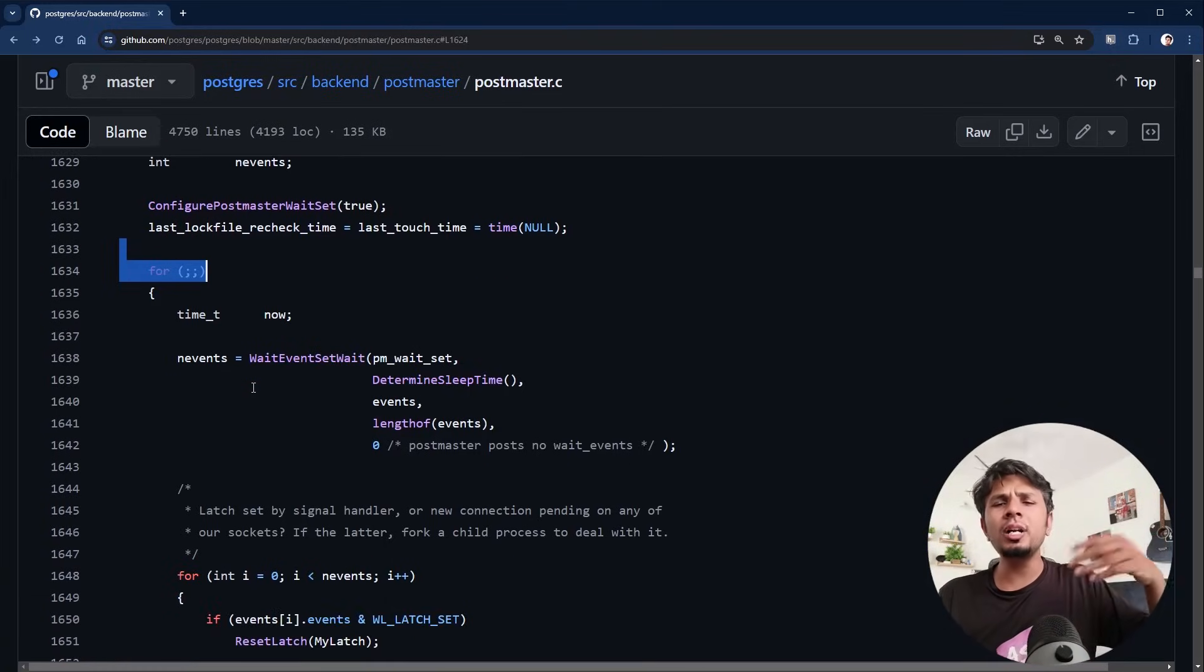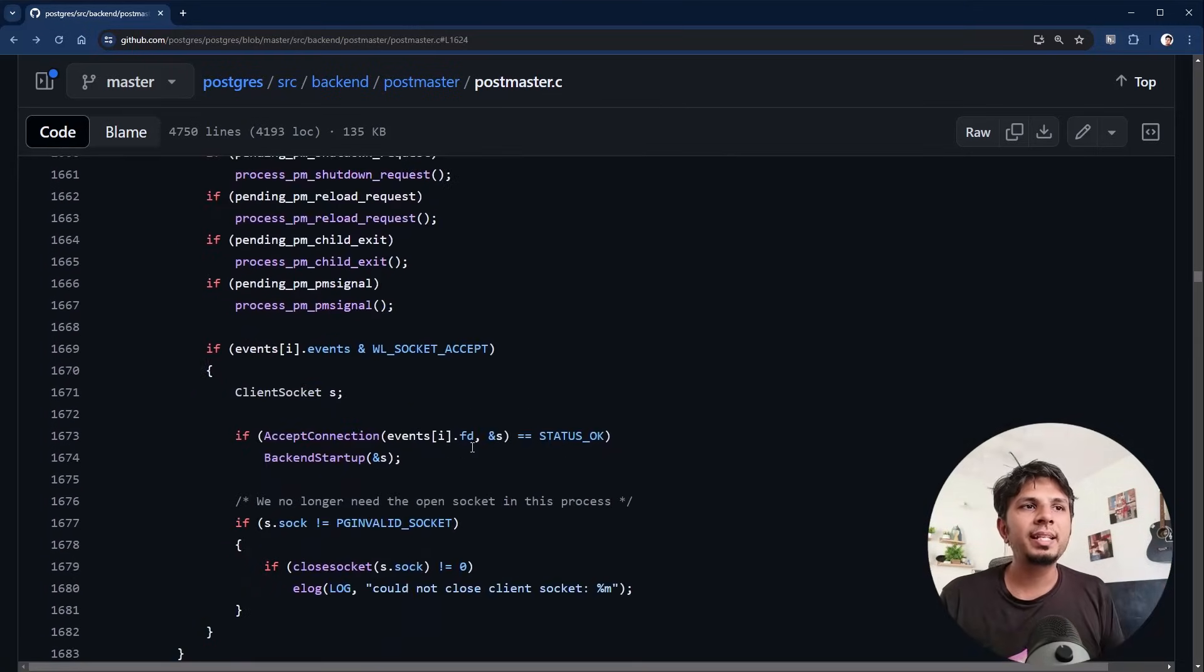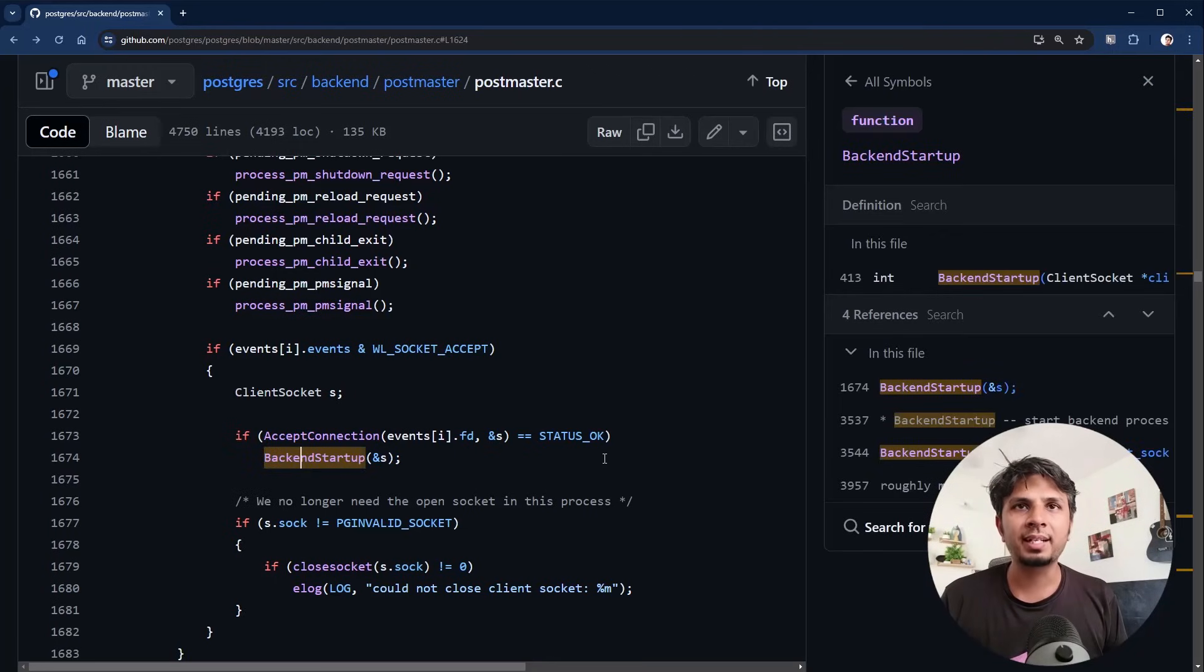For all of that, when it is accepting the connection, it is starting a backend process. It's called a backend process. When the client connects, your postmaster creates a backend process for it. If I click on backend_start...